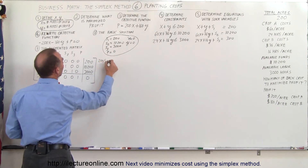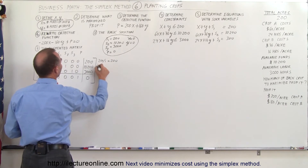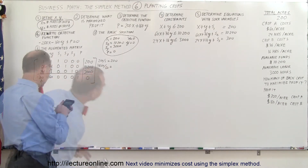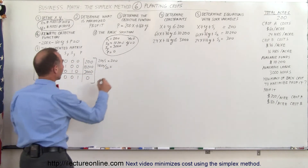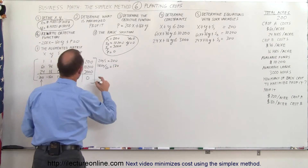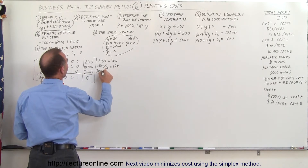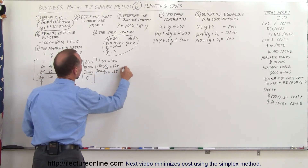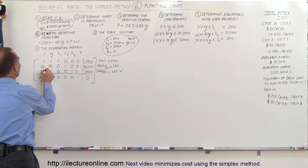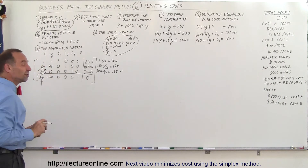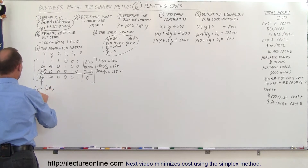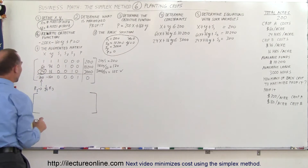So we have 200 divided by 1 equals 200. We have 10,200 divided by 60, which equals 170 — that's a lower number. And then 3,000 divided by 24 gives us 125. That is the lowest ratio of the three, which means we're going to pivot around that point. We need to turn that entry into a 1. That's the third row, so we take the third row and replace it by 1 over 24 times the third row.